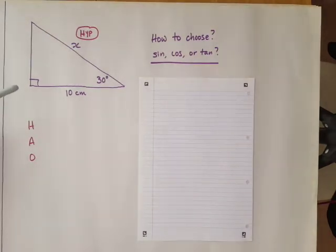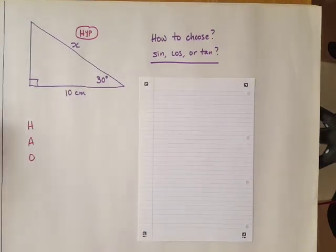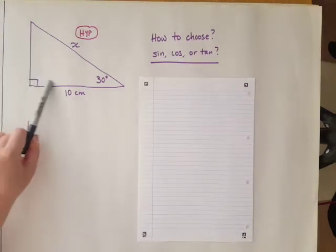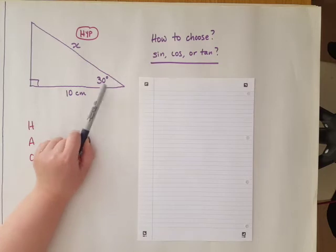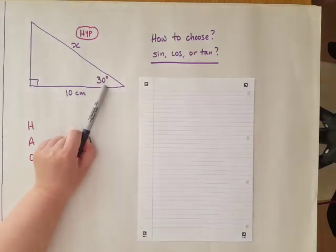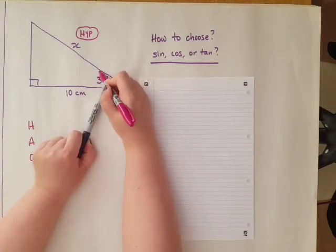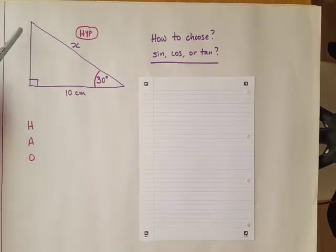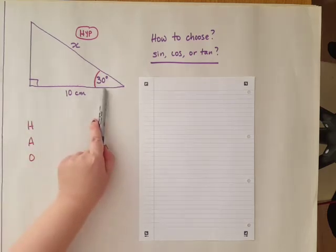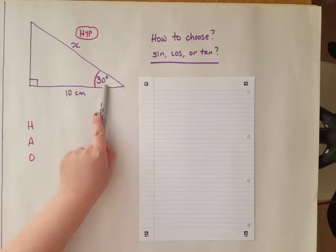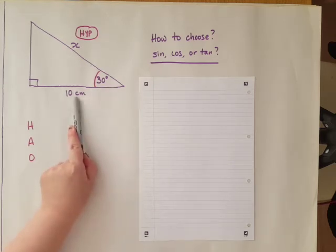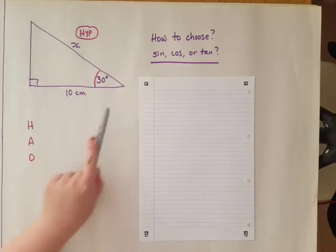When I say the angle, it's not the 90-degree one but the one which is labeled. We've labeled this angle at 30 degrees, and we're going to use this angle. The side next to this angle is the 10-centimeter side, so that is your adjacent.